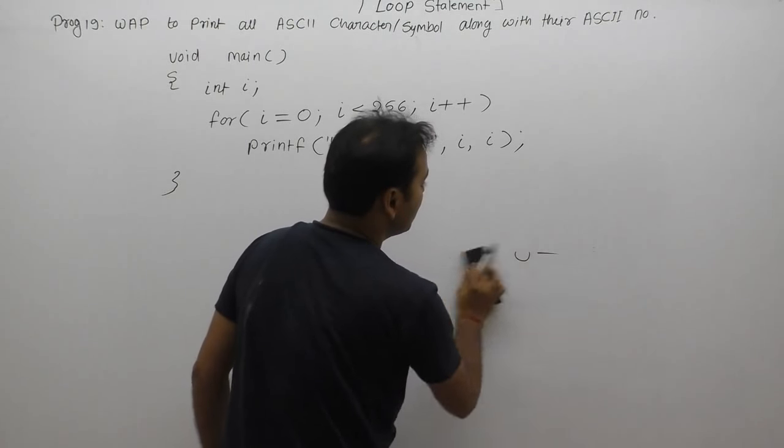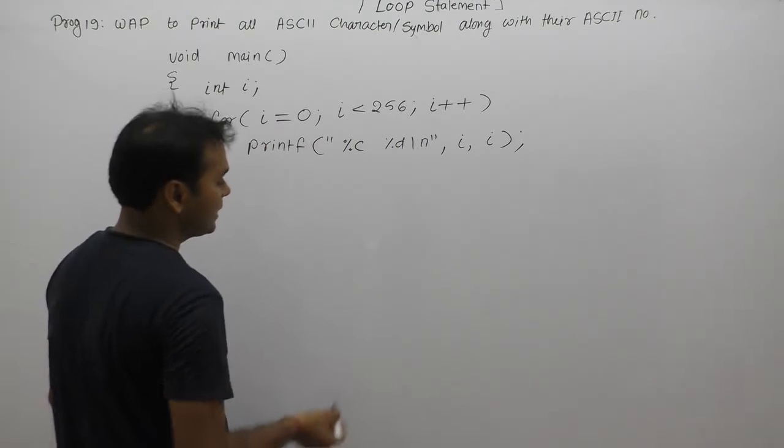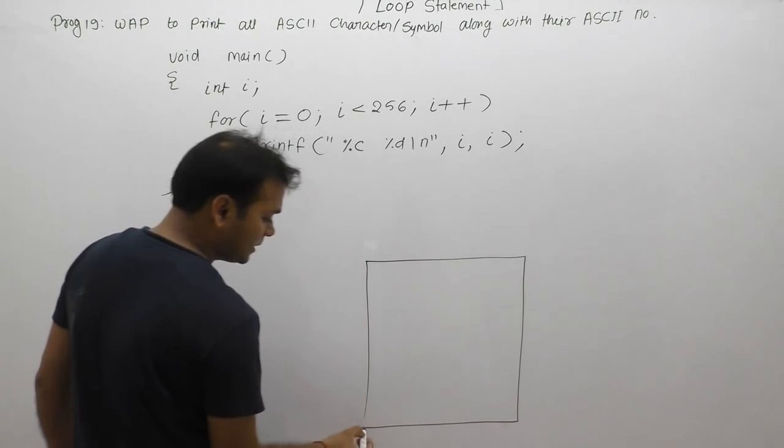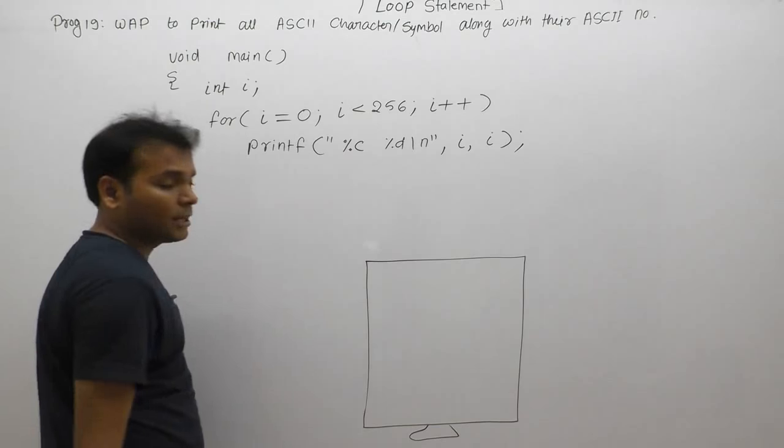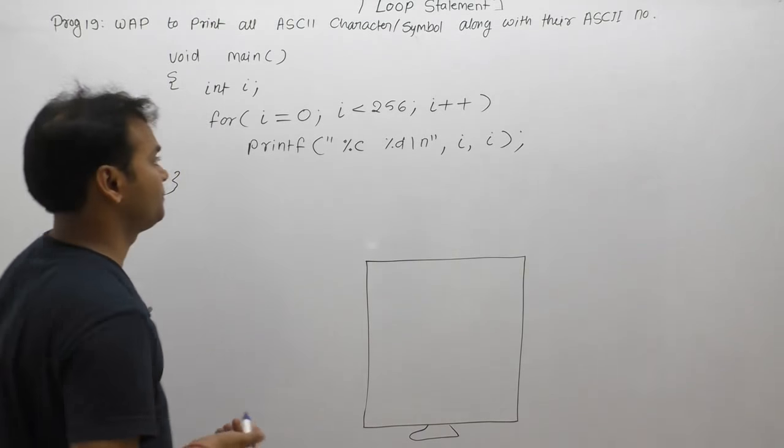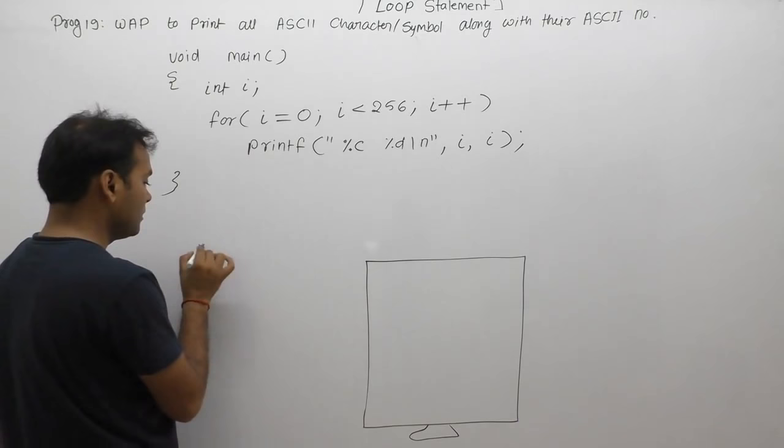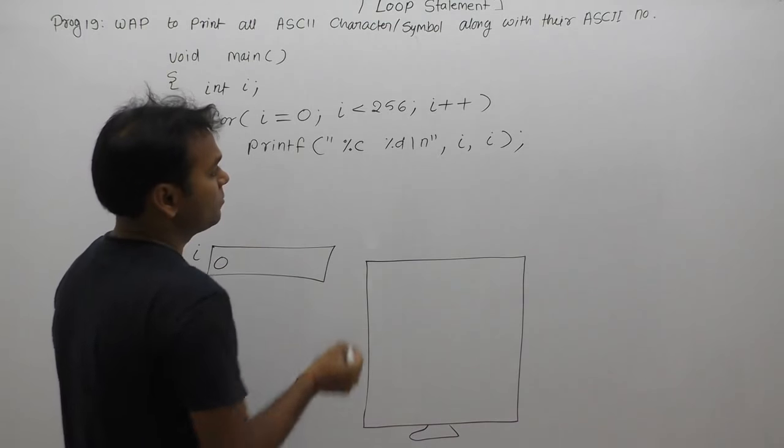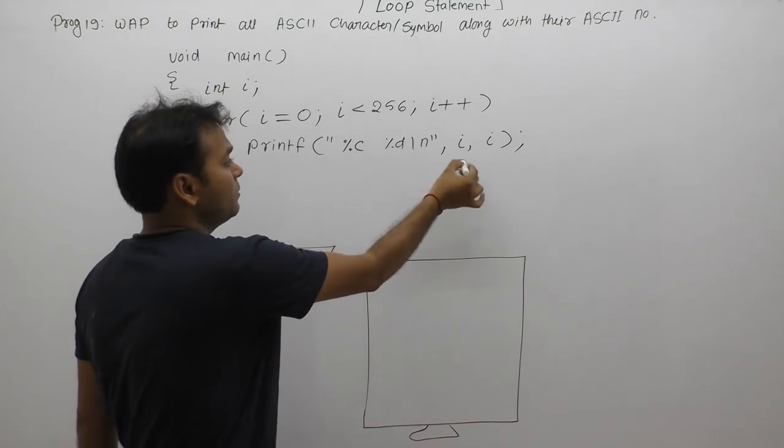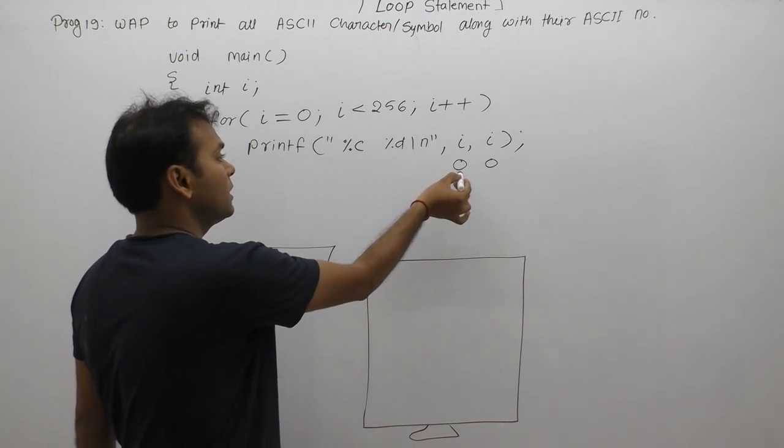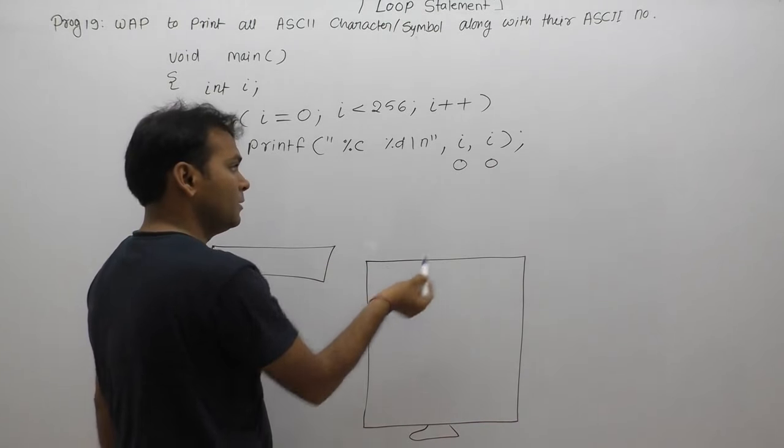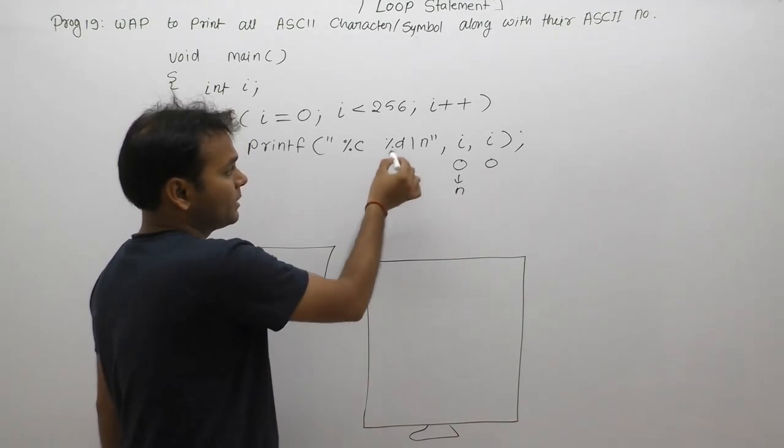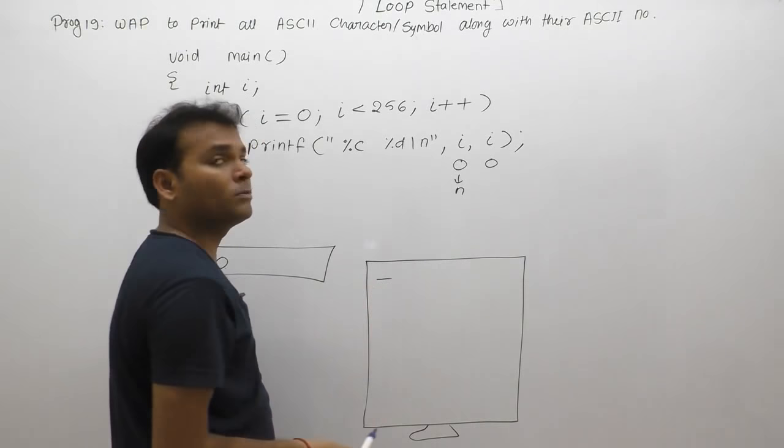When this program executes: initially i's value is 0. In C, some characters cannot be displayed - in that case it displays some space or special effects. First, initialize i to 0. Then 0 less than 256 - condition is true. In the first case, i's value is 0. At the second place, 0 is passed. Means in the first case, 0 displays the character value - 0 prints simply null. Null means not printed. %d displays 0 itself. At that place there is space, not visible.